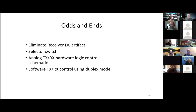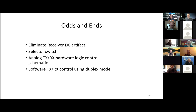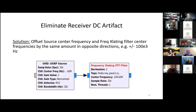Here are the odds and ends: eliminate the receiver DC artifact using a selector switch, an analog transmit/receive logic control — which was discussed at the last meeting — and a software method of transmit/receive control. If you're using duplex mode with your hardware, how do you eliminate the receiver DC artifact? It's really simple. This block converts the RF to baseband. With a complex output, you get a spike right in the center at zero frequency, and you get the upper sideband, the lower sideband, the positive frequency and the so-called negative frequency.